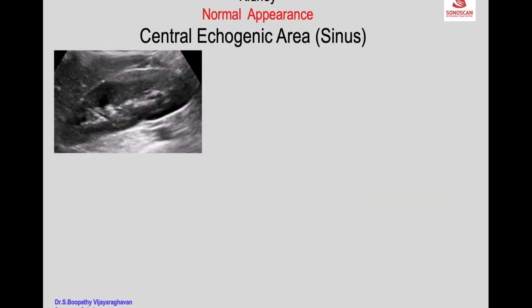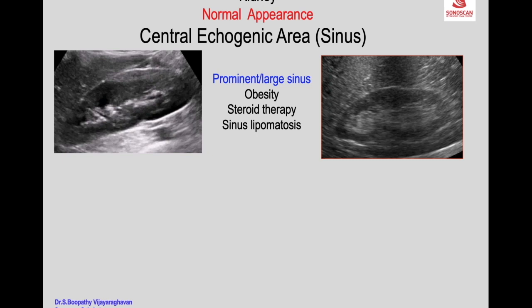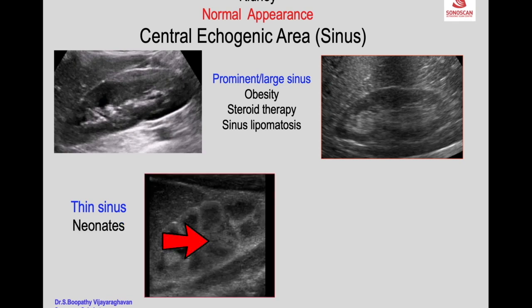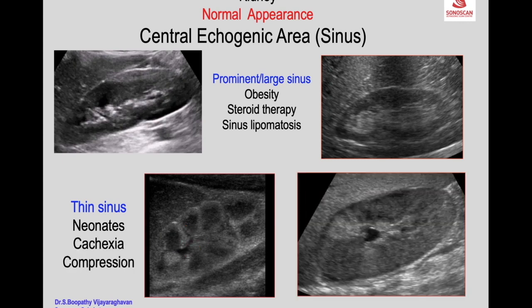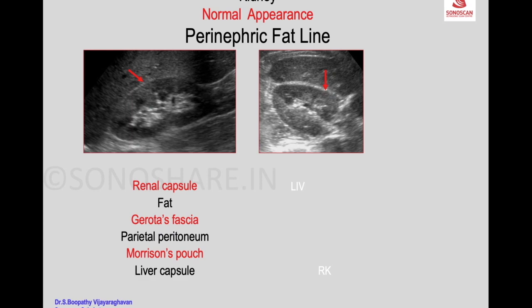The central echogenic area contains the pelvicalyceal system as described. A prominent or large sinus is seen in obesity, with steroid therapy, and in sinus lipomatosis. A thin central echogenic area is seen in neonates, in cachexia, and when there is parenchymal swelling with compression of the central echogenic area — which occurs abnormally with parenchymal edema or infiltration. An example is acute pyelonephritis causing compression of the central echogenic area; lymphomatous infiltration of the parenchyma produces the same effect.